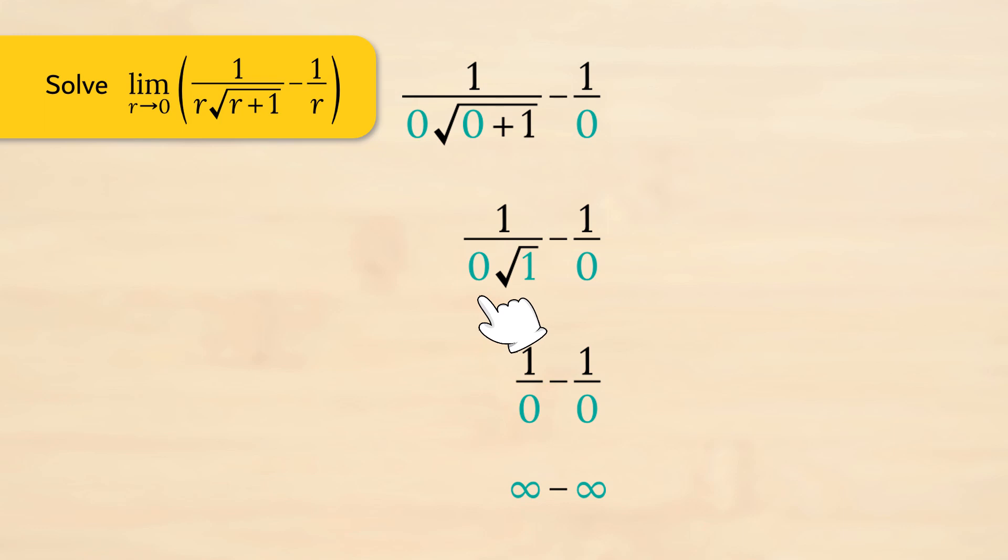We have 1 over 0 multiplied by the square root of 0 plus 1 which is just 1. That fraction is 1 over 0 and it approaches infinity. The second fraction, we have 1 over 0 and that also approaches infinity. We have the indeterminate form infinity minus infinity.